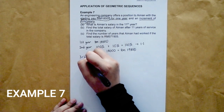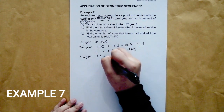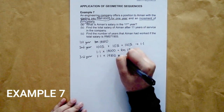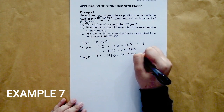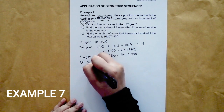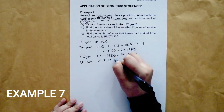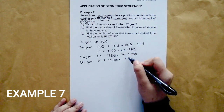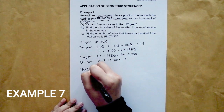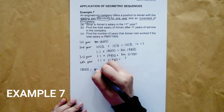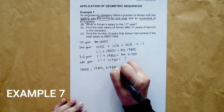For the third year, Aiman will get 1.1 times RM19,800, which equals RM21,780. For the fourth year, you can try 1.1 times RM21,780. From these calculations, we can form the geometric sequence: RM18,000 for the first term, RM19,800 for the second term, RM21,780 for the third term, and so on.